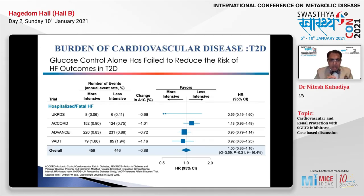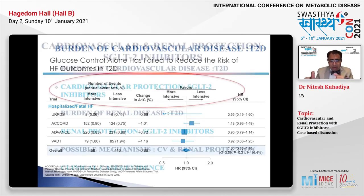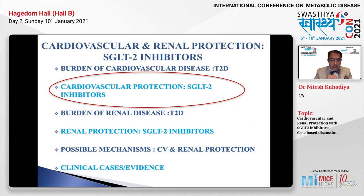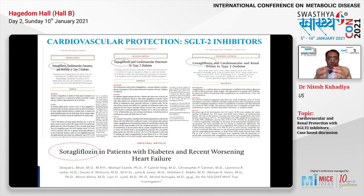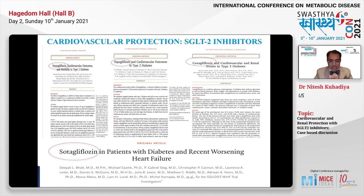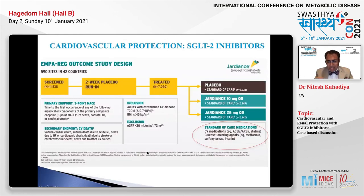So how do SGLT2 inhibitors come to our rescue? Can they lower cardiovascular death and hospitalization for heart failure? Let's dive into the evidence with empagliflozin, dapagliflozin, canagliflozin, and more recently sotagliflozin. All these trials are very similar with minor differences. Sotagliflozin included patients with diabetes and recent worsening of heart failure, which distinguishes it from the others.